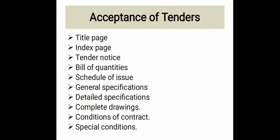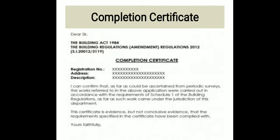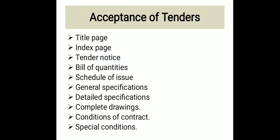Acceptance of Tenders: The tender document includes a title page and index page. Based upon the comparative statement, usually the lowest tender will be selected. The lowest tender is accepted except in cases where the work of the contractor who quoted the lowest rate has not been satisfactory on a previous occasion, or there is doubt about their suitability.